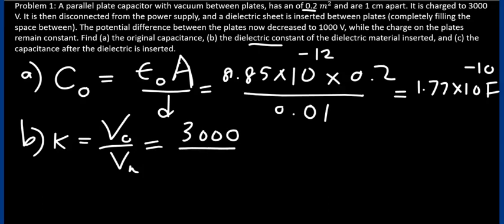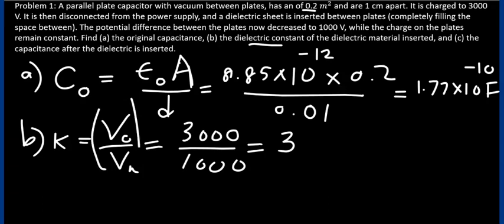And after the dielectric was inserted, it reduced to 1,000. So, the dielectric constant of that material is quite simply 3. It does not have any units because it is a ratio.